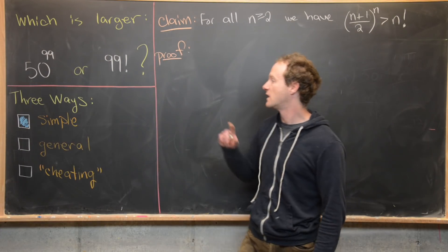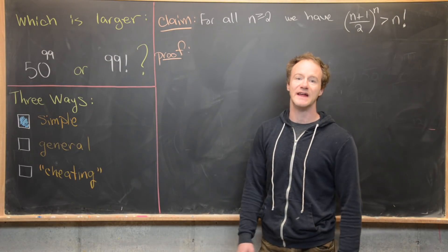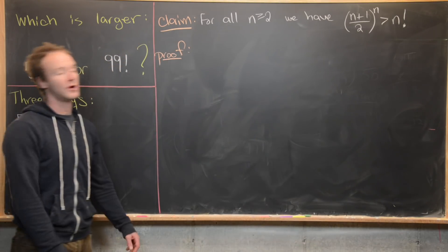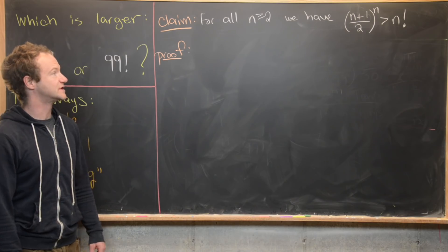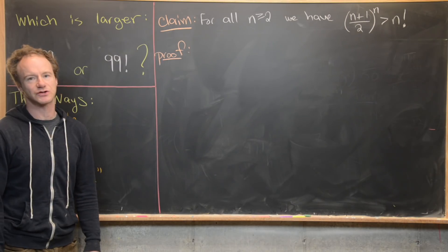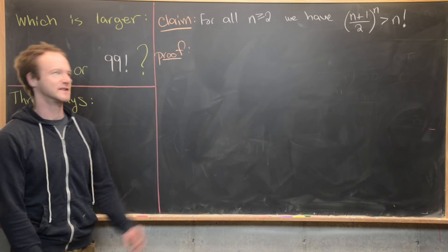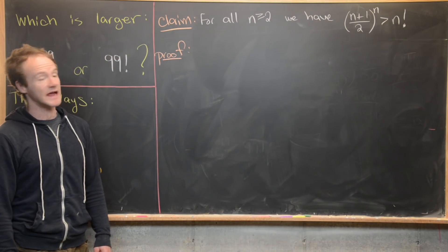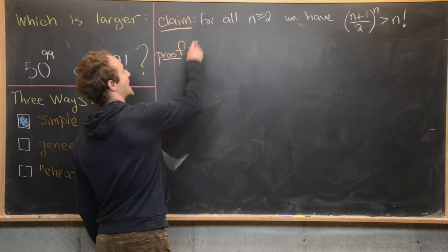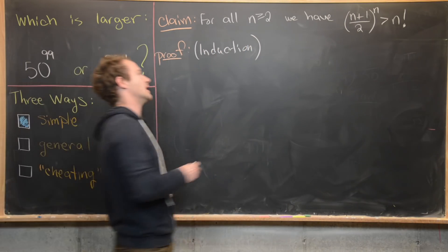We just finished the simple calculation proof. Now we're going to prove a general statement which will imply it: for all natural numbers n greater than or equal to 2, we have (n+1)/2 to the nth power is bigger than n factorial. Notice that what we just showed is the 99th case of this general statement, so this is indeed a generalization of our specific result. We're going to prove this by induction.